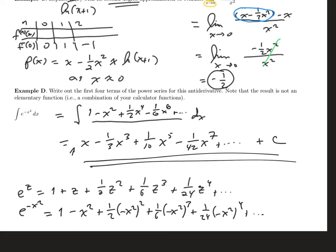So we have a power series representation, and we can write out as many terms of that as we wanted to. But a power series representation for the antiderivative of e to the minus x squared, even though there is no combination of elementary functions that has exactly that power series.